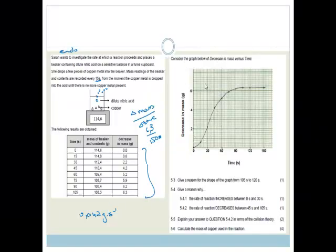Now we've got a pretty graph, decrease in mass versus time. It says give a reason for the shape of the graph from 105 to 120. Do you see that at this point there is no more decrease in mass, which means the reaction has run to completion. It is finished. This is not an equilibrium question. This is just a straight reaction of copper reacting with nitric acid, giving off gas and forming a bunch of other things.